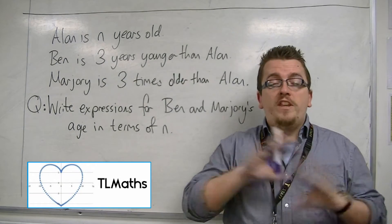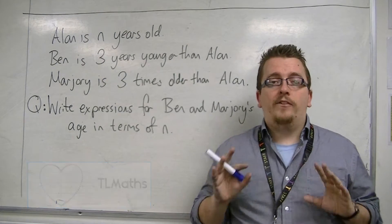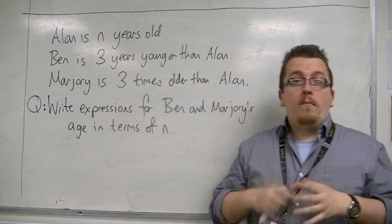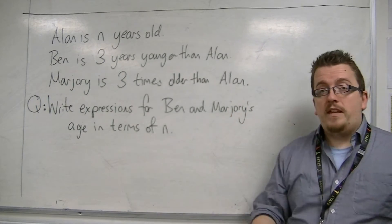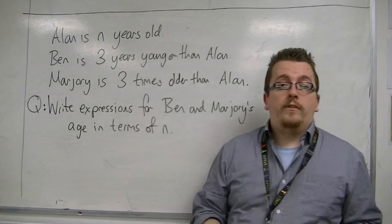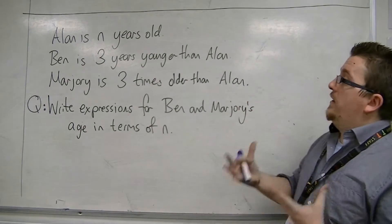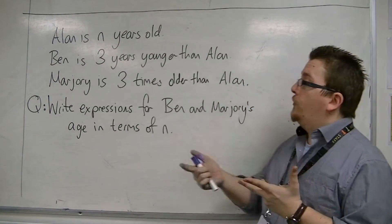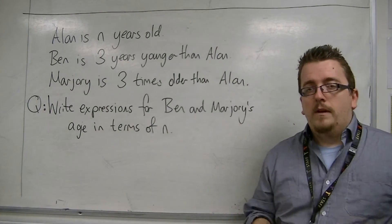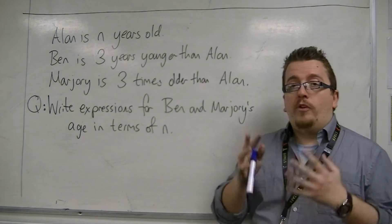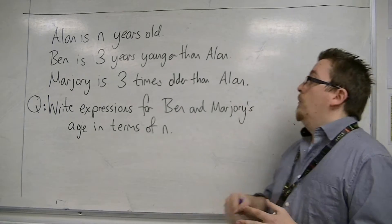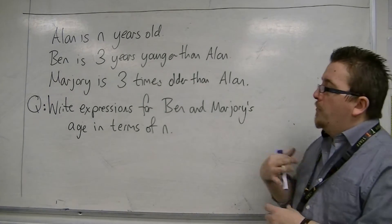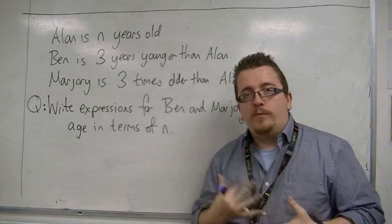Let's say we don't know Alan's age, and let's call that n years. So it might be 10, it might be 20, but we just don't know how old he is. So Alan is n years old. We do know that Ben is 3 years younger than Alan, and Marjorie is 3 times older than Alan. What we want to do is write down expressions for both Ben and Marjorie's age in terms of n.